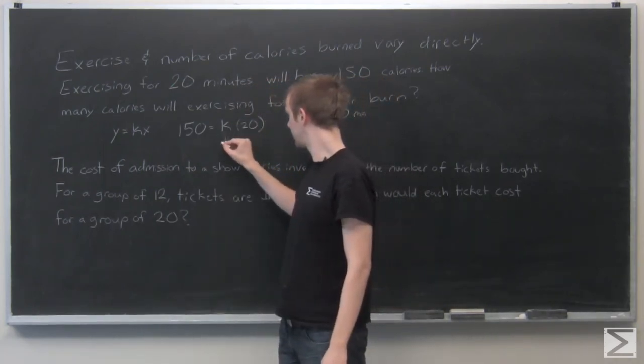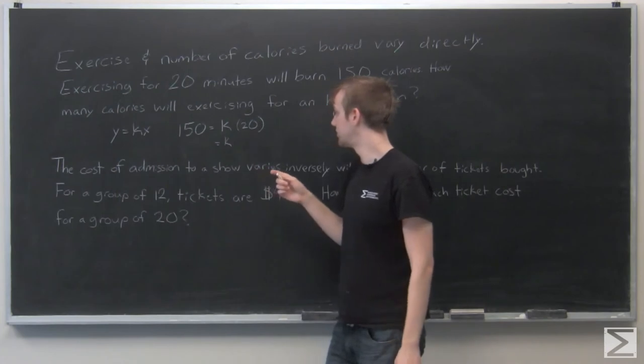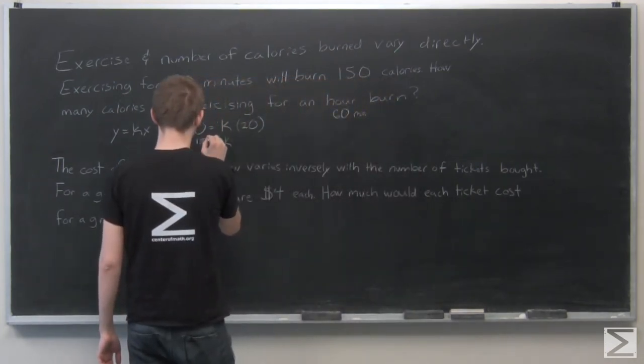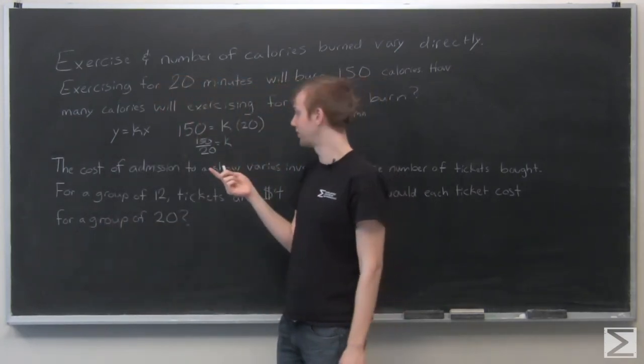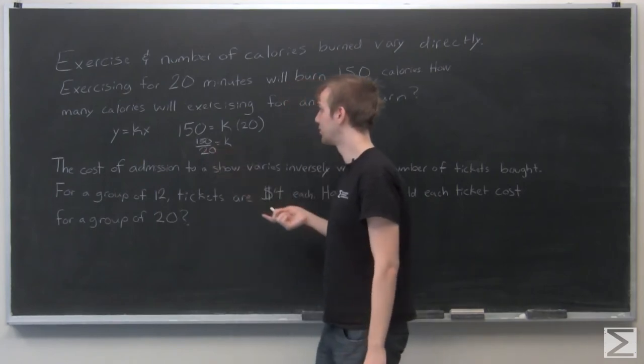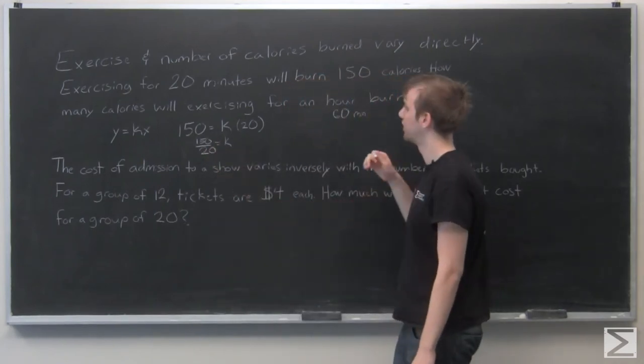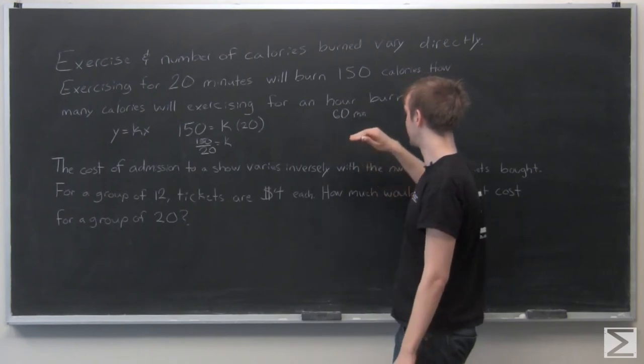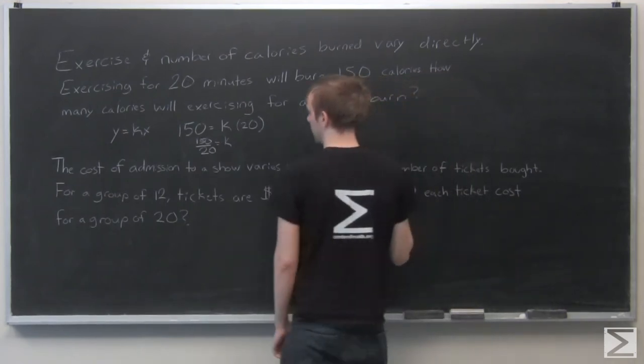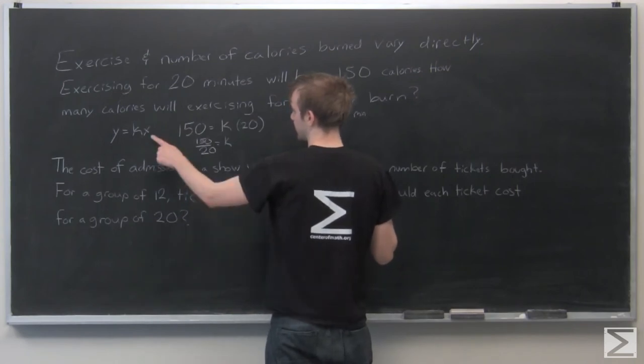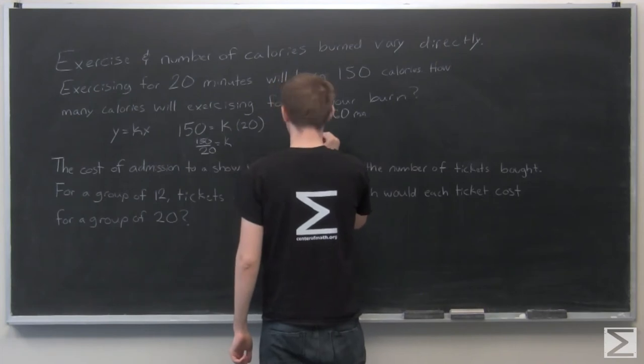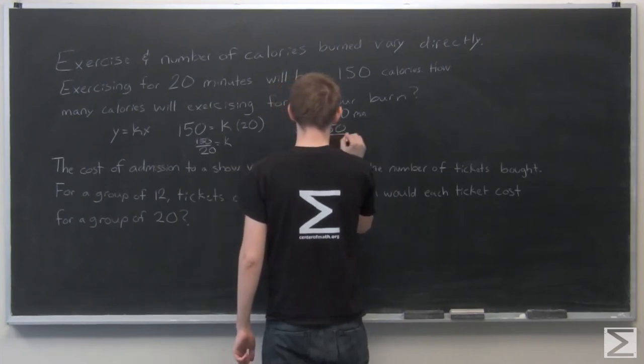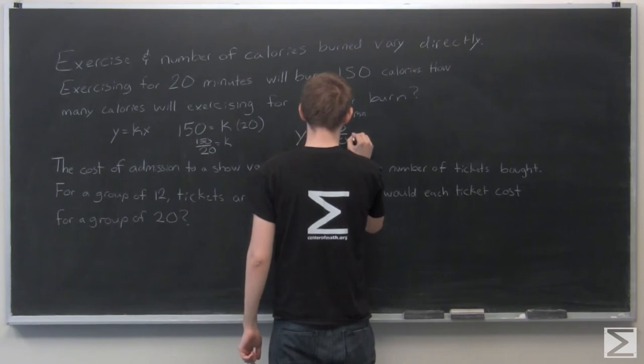So now to solve for K, just divide 150 by 20. And I'm going to leave that unsimplified, just as 150 over 20. And now we can solve for the number of calories when we exercise for 60 minutes. So again, I said X was minutes. So we'll have Y equals our K value, which is 150 over 20, times 60.